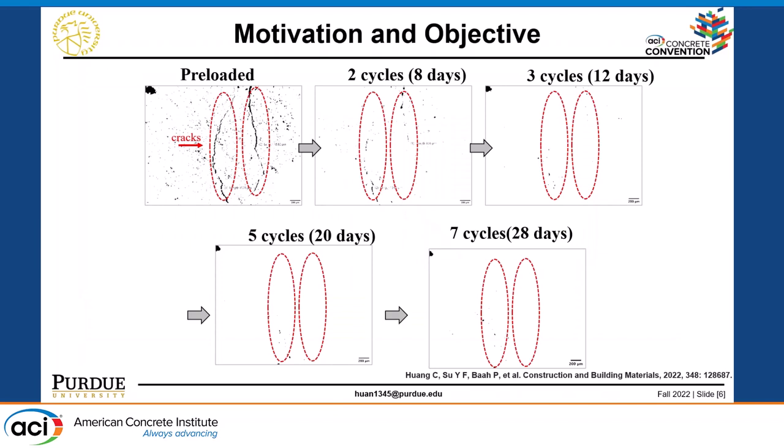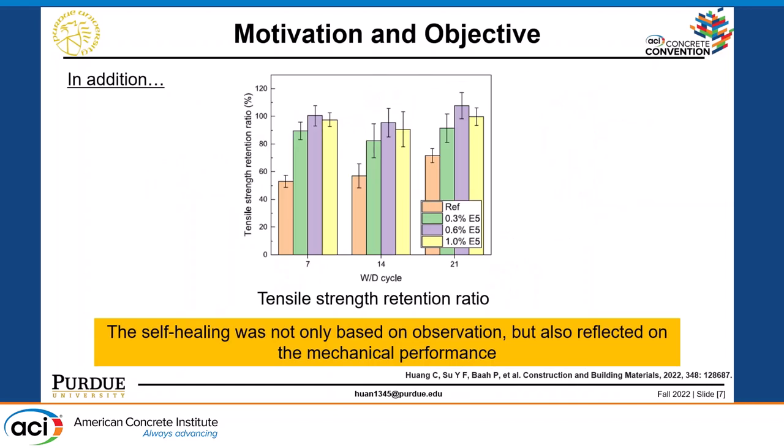More photos show that with the incorporation of nanomaterial, some cracks can completely self-close within 28 days. We observed very significant efficiency when we have nanosilicate in the cementitious composite. All these results are based on observation under the microscope. We also have mechanical tests to see if we have self-closure of the cracks, how about the self-healing and regaining of strength. We observe an increase of the tensile strength retention ratio with increasing dosage of nanosilicate, so self-healing was reflected in mechanical components as well.